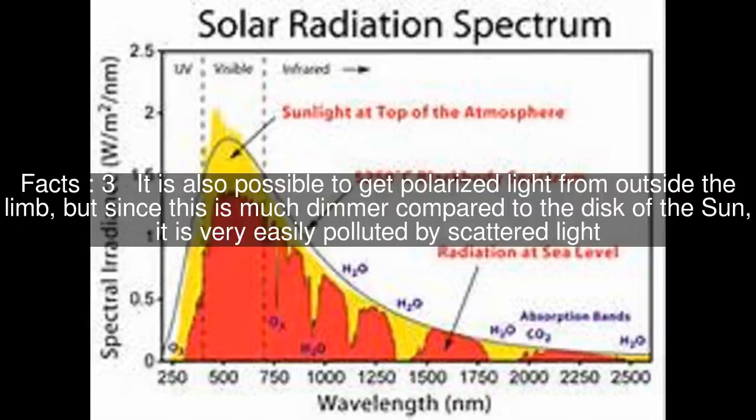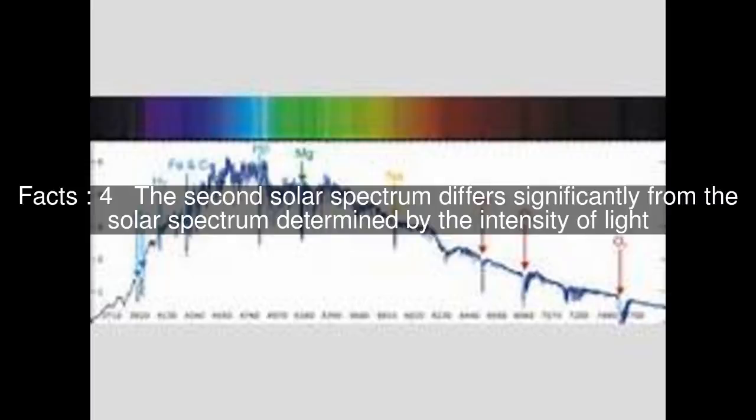It is also possible to get polarized light from outside the limb, but since this is much dimmer compared to the disk of the Sun, it is very easily polluted by scattered light. The second solar spectrum differs significantly from the solar spectrum determined by the intensity of light.